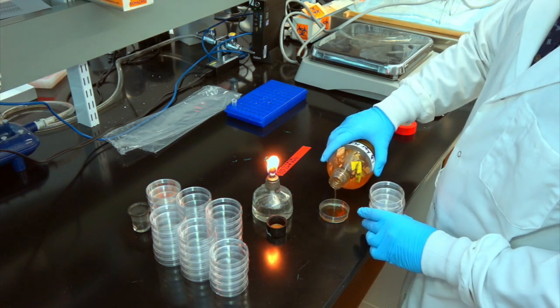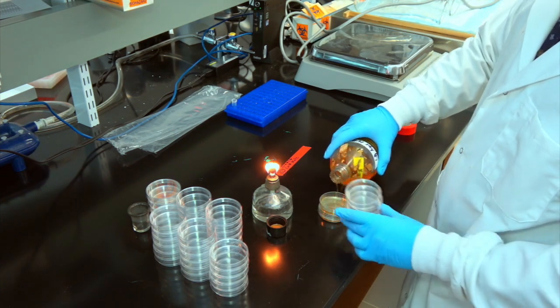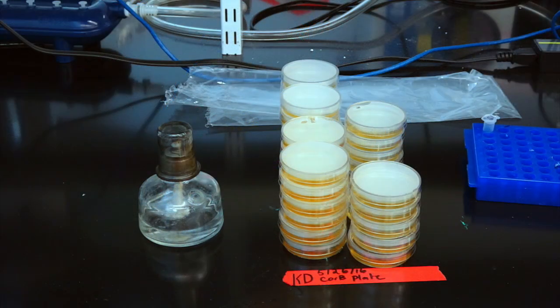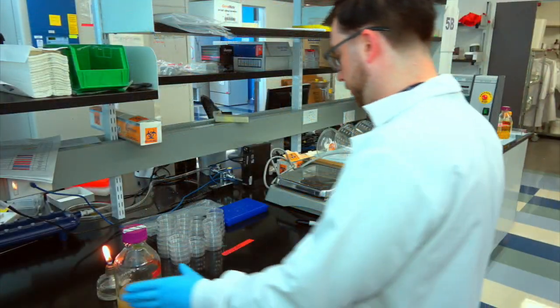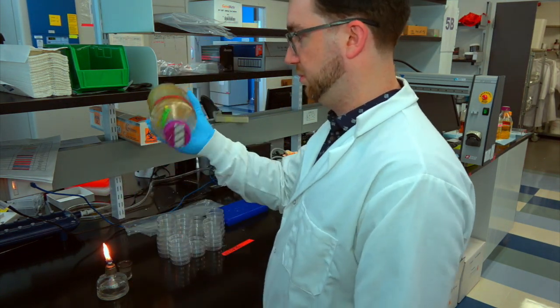As you pour your plates, be careful to recap them quickly, since that little flame certainly won't kill everything that could fall on them. We stack our plates in piles of about 5 as we pour. Make sure you swirl each plate after you pour it. If your LB agar partially solidifies, you should stop pouring and remake the gel mix.